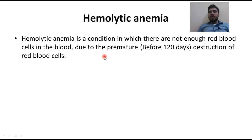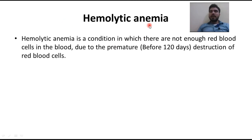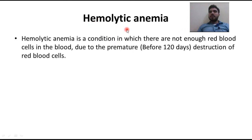One red blood cell carries one billion molecules of oxygen. The normal full life span of an RBC is one hundred and twenty days. When premature RBC destruction occurs — that is, destruction before one hundred and twenty days — we suffer from a disease called hemolytic anemia, meaning our body will be deficient of oxygen due to this premature destruction of RBCs.